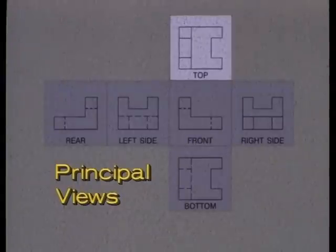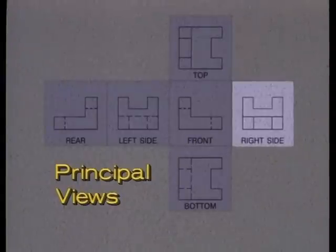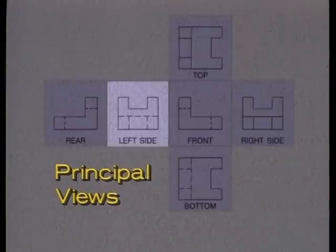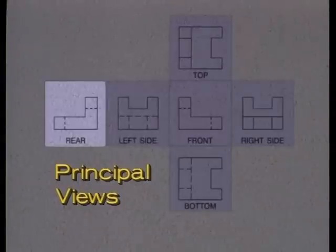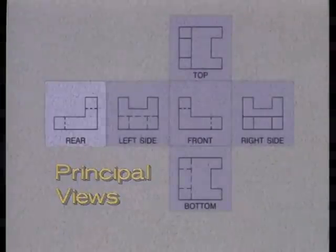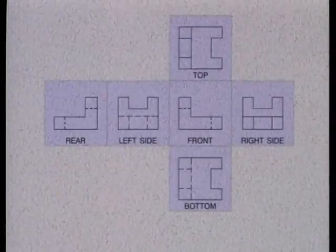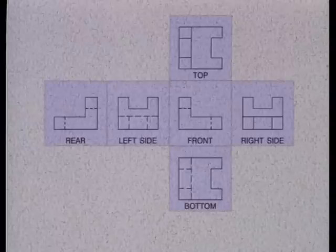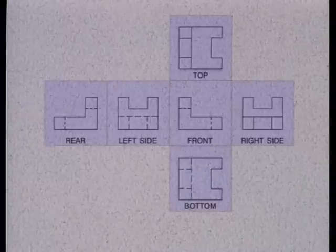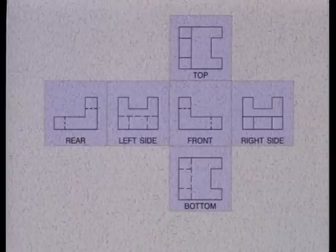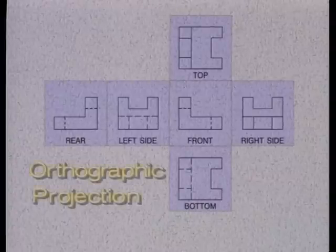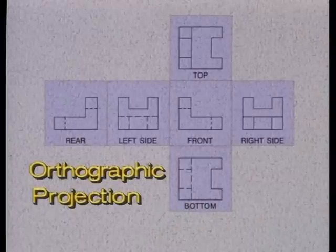The six principal views are: front, top, right side, left side, bottom, and rear. They define the basic shape and features of the part. This method of representing a three-dimensional object is called orthographic projection.